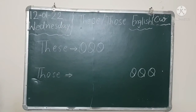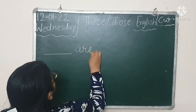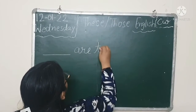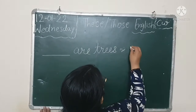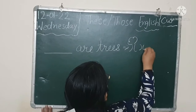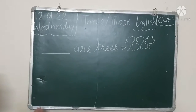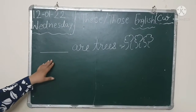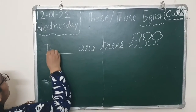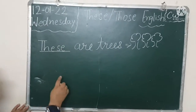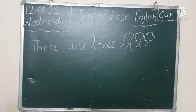अगर बहुत सारे objects हों, many things हों, हम उनके लिए these and those use करते हैं. For example: 'These are trees' — because trees are near to us.